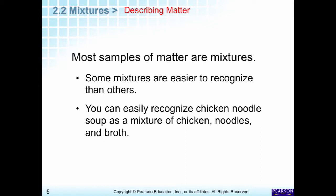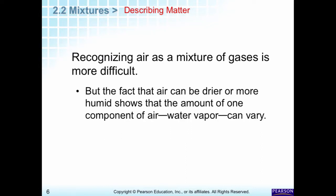Some things are very easy to recognize as mixtures because you can see the parts that make them up. For instance, chicken noodle soup — you see chicken, noodles, and broth. Air is also a mixture. We can't see it because it's very small particles, but we know it's there. We know oxygen is there because we're breathing, and there's nitrogen too. Plus other gases in very small quantities.